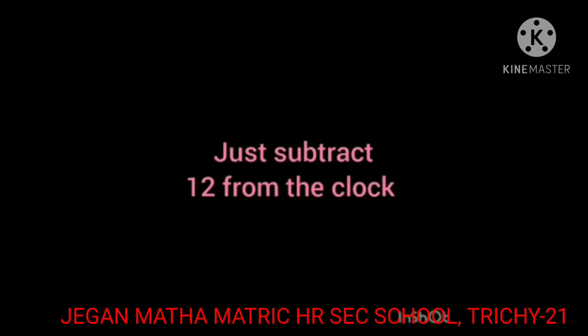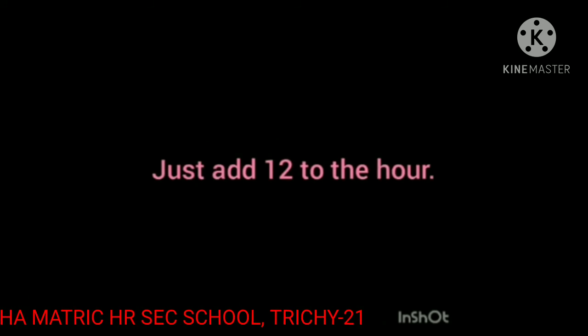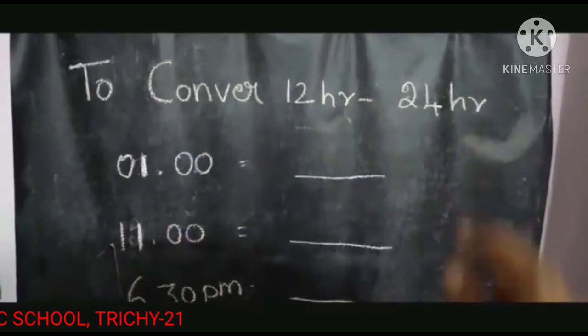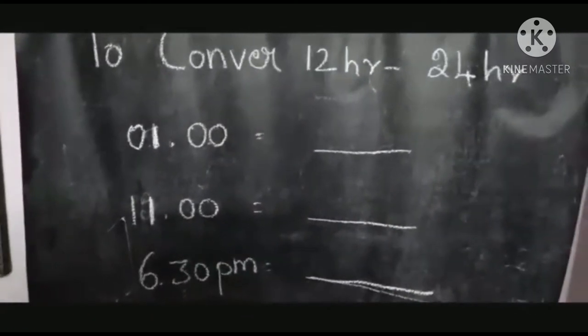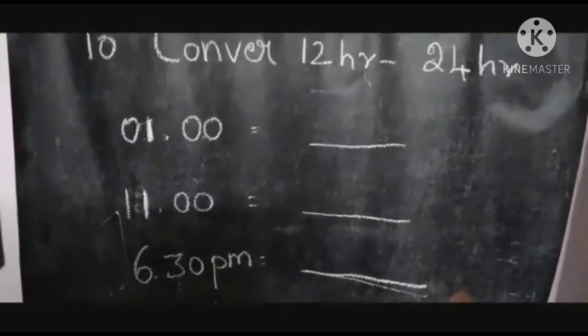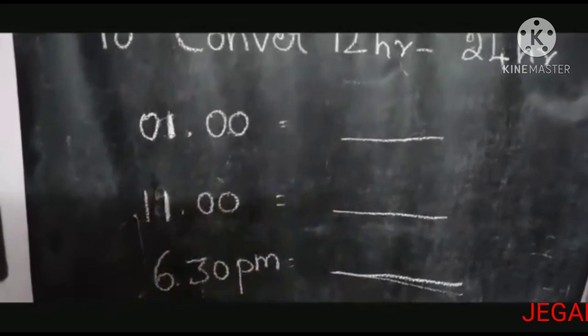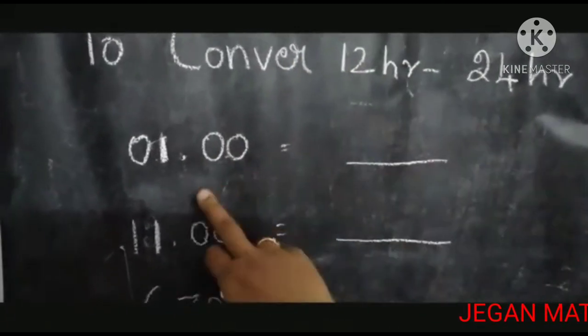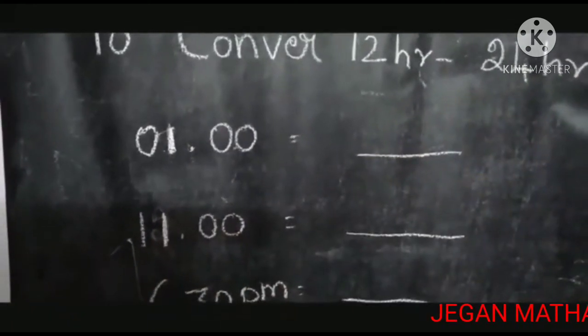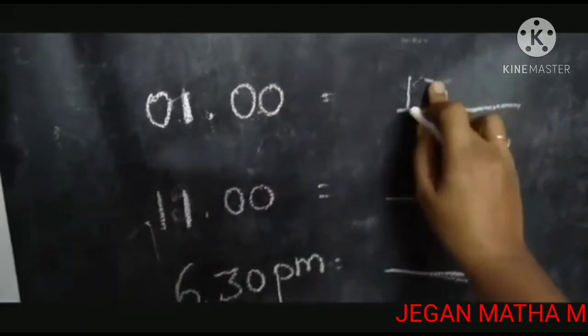Now let's look at the time converter. To convert 12-hour time to 24-hour time, you simply add 12 to the hours. For example, 1 o'clock PM in 12-hour time — add 12: 1 plus 12 equals 13, so the time is 13:00 in 24-hour format.